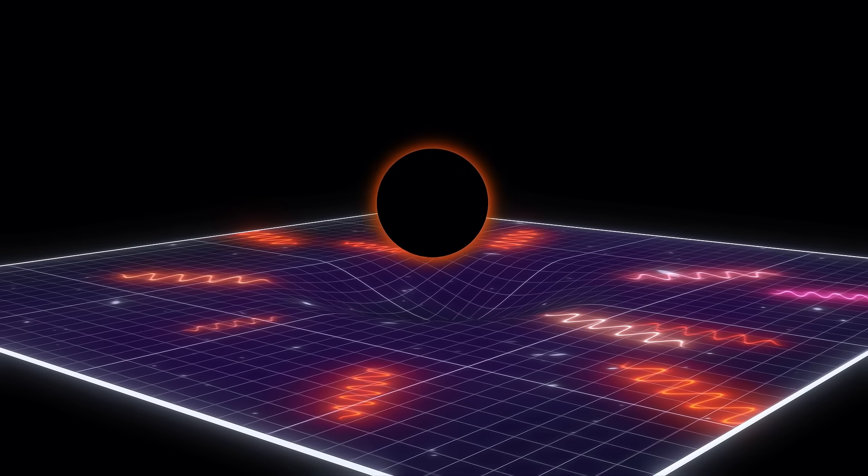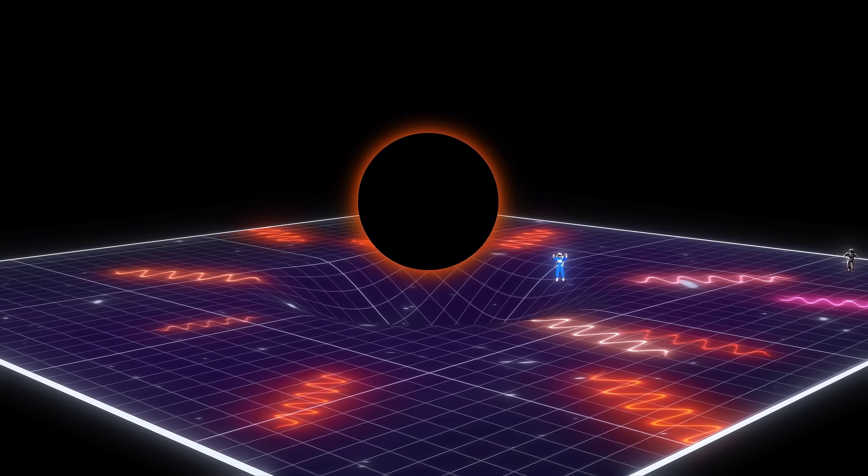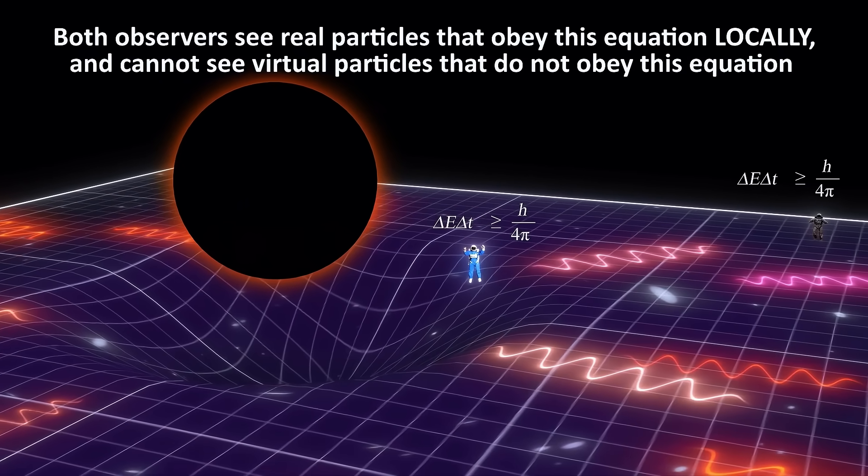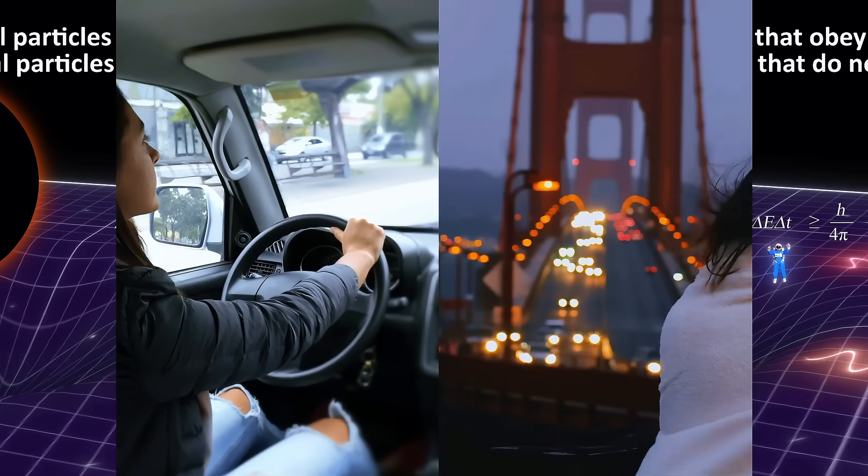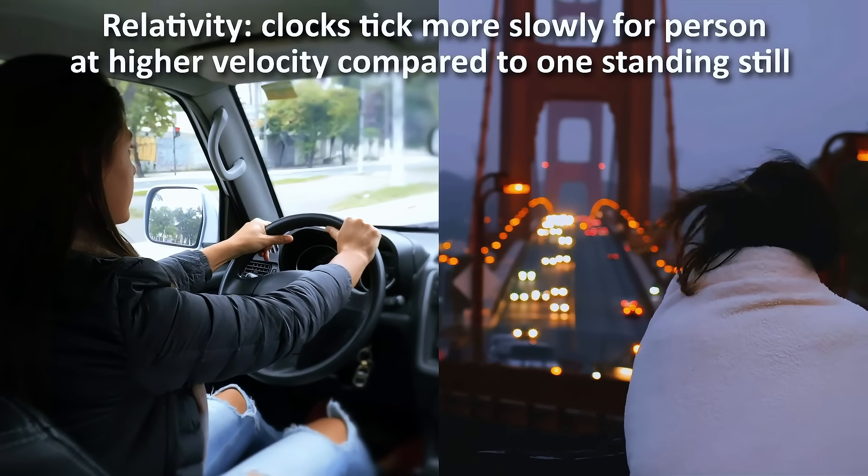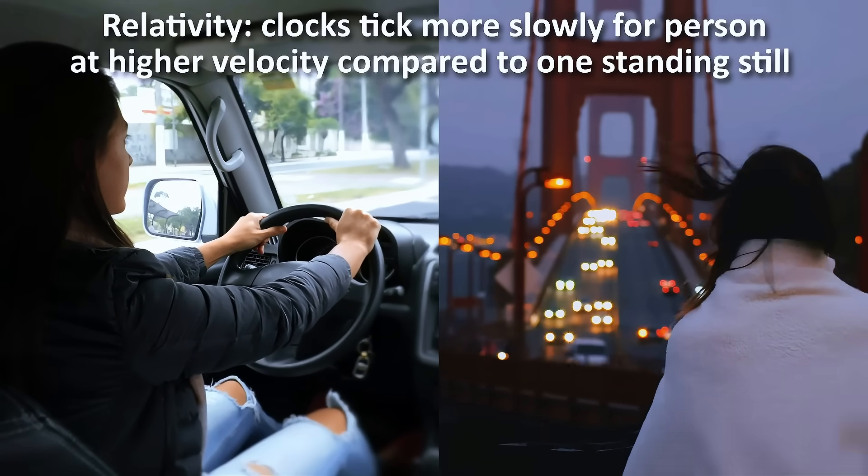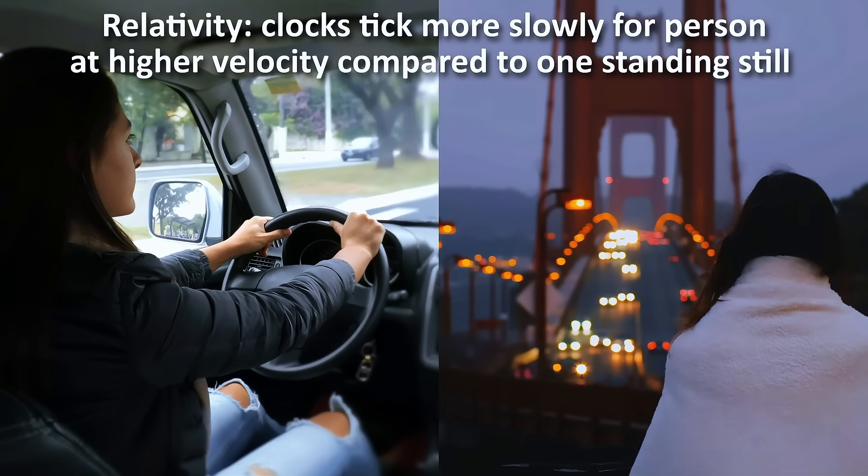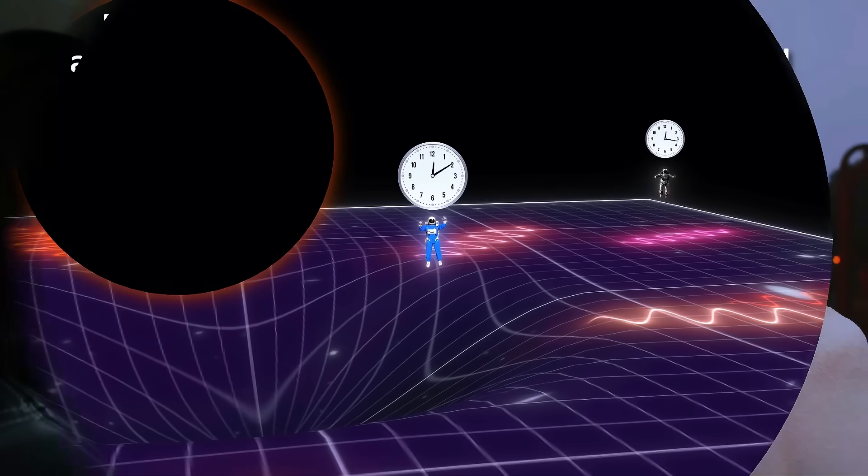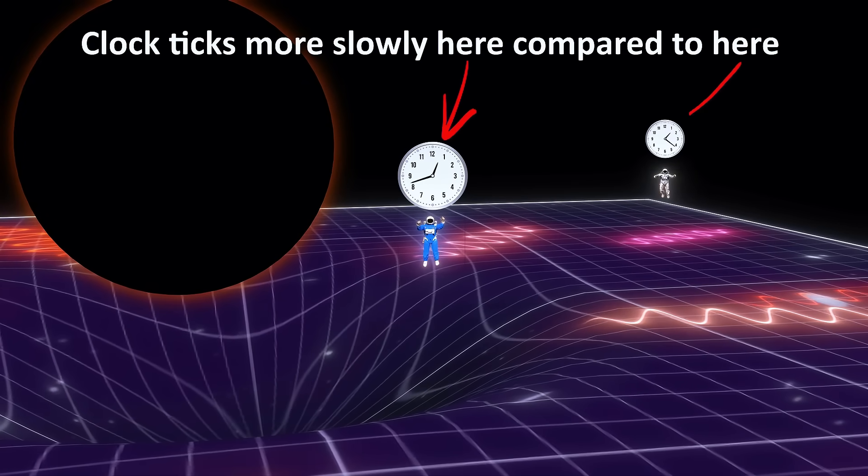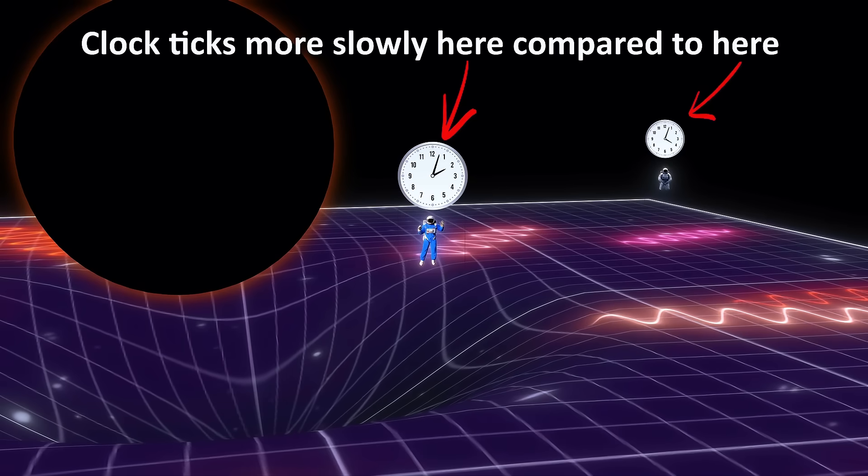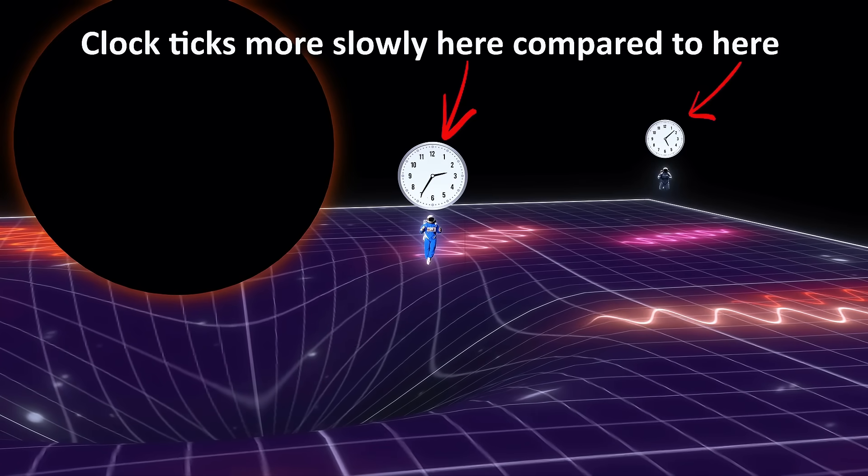To any observer located anywhere in the universe, the zero point energy will appear to have the same value no matter where they are located. But relativity tells us that different observers perceive different realities. For example, clocks will tick more slowly for an observer that's moving versus one that's standing still. Similarly, the clock of an observer in a gravitational well, due to the curvature of spacetime, will tick more slowly compared to an observer standing far away in flat spacetime.